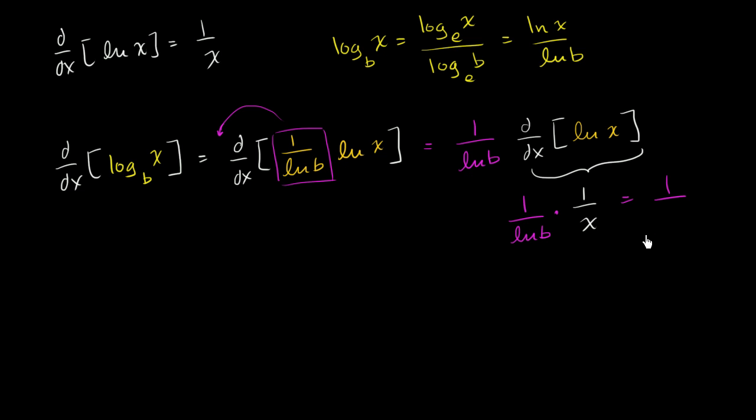Or 1 over the natural log of b, which is just a number, times x. So if someone asks you, what is the derivative with respect to x of log base 5 of x, well, now you know. It's going to be 1 over the natural log of 5 times x. Just like that.